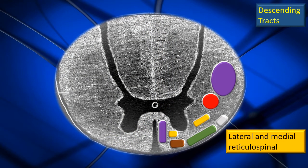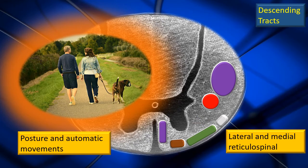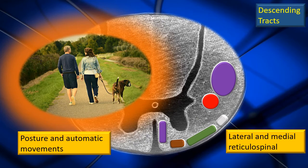Next, the lateral and medial reticulospinal tracts. This tract generally handles posture and automatic movements. For example, while you are walking, there are certain incidental movements of the upper limb. In addition to the main walking controlled by the pyramidal tract, this tract ensures all the other automatic movements associated with walking, so that balance and posture are maintained. These functions are carried by messages transmitted through this tract.